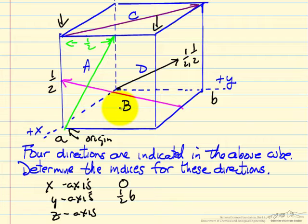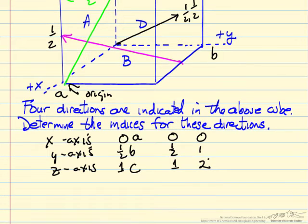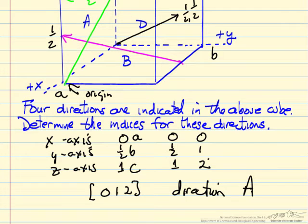And for the z axis, the projection is one of c, the dimension in the z direction. So then to create, so this is zero times a, we first say zero, one half, and one, removing a, b, and c. We then make them all integers, so zero, one, and two. And then our direction would be zero, one, two. So just the x, y, and z vector projections. So this is the direction for A, the green line.